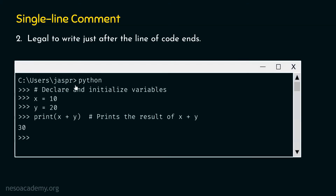For example, in this piece of code I have written a single line comment after the line of code ends. I wrote 'print x plus y' and after that, I added 'hash prints the result of x plus y'. So it is clear that we can write a single line comment after the line of code ends. That covers what single line comments are all about.